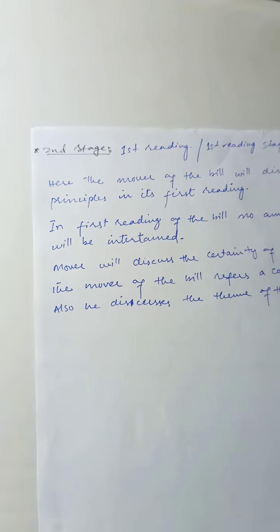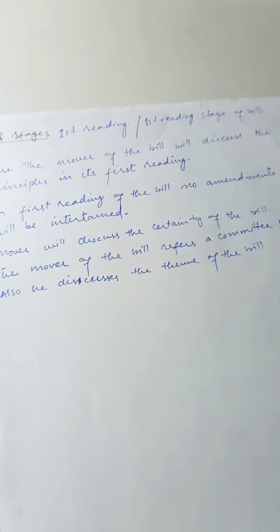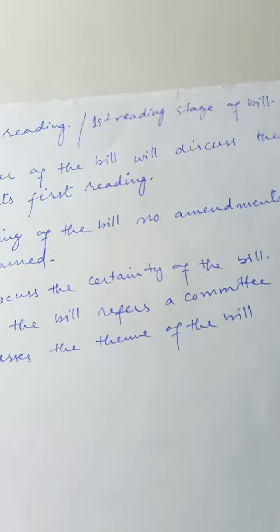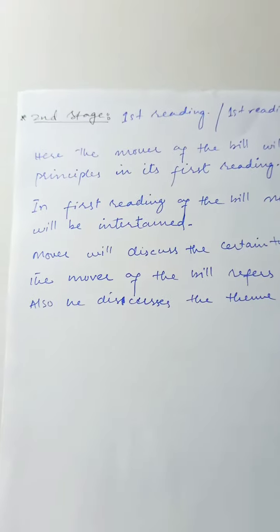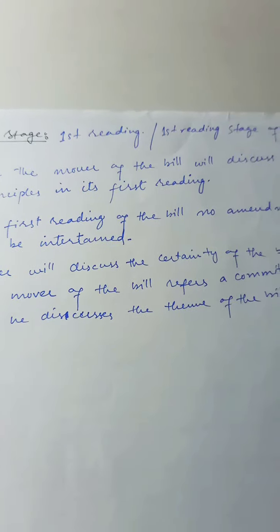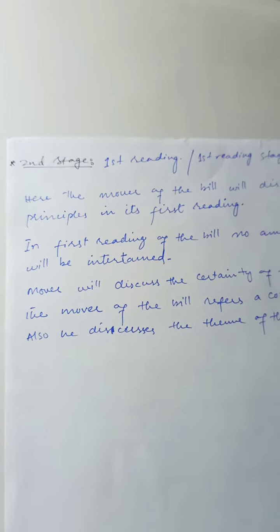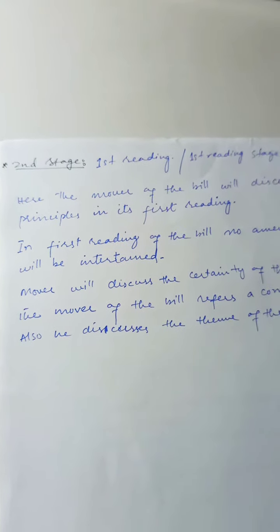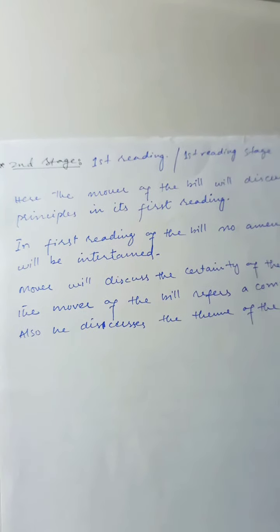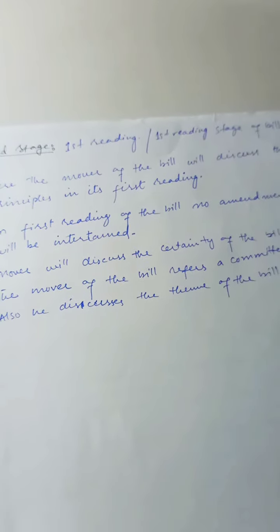What happens in the second stage? There happens the first reading — also called the first reading stage of a bill. In this stage, the mover of the bill will discuss the principles of the bill in its first reading. In the first reading, no amendments will be entertained — meaning no changes to the wording of the bill will occur at this stage.